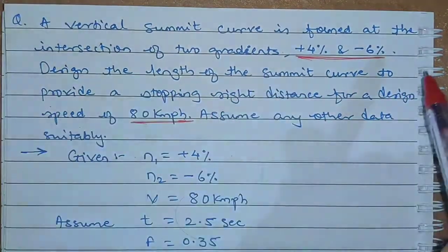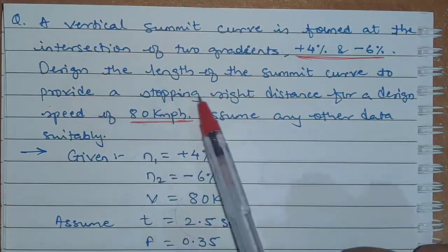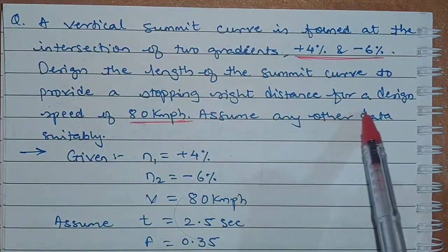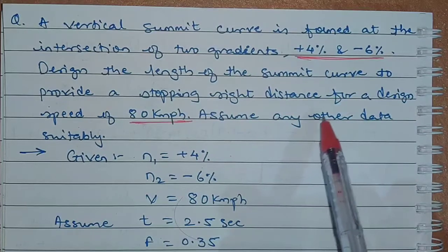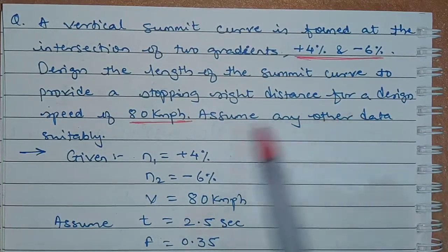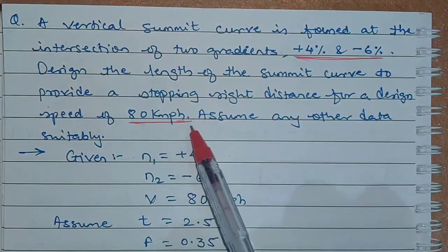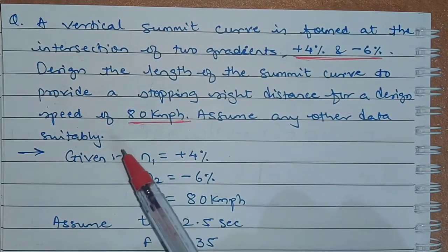Design the length of the summit curve to provide a stopping sight distance for a design speed of 80 km per hour. Assume any other data suitably.